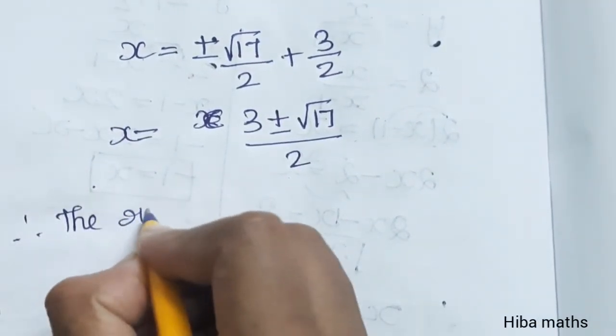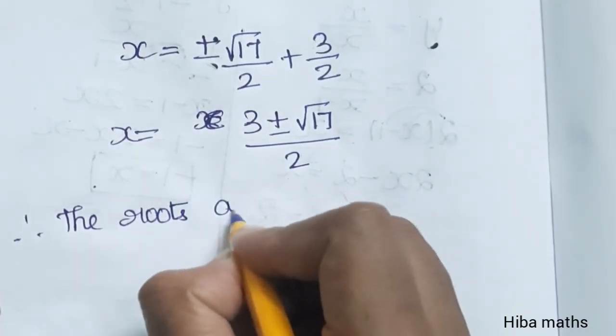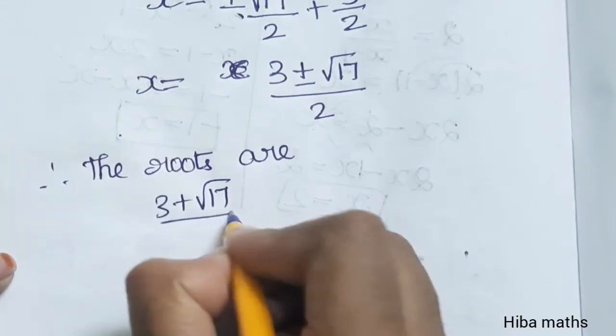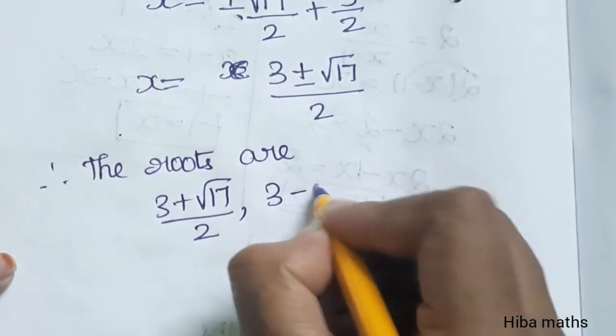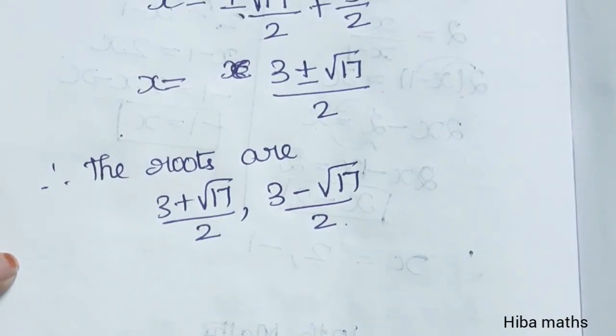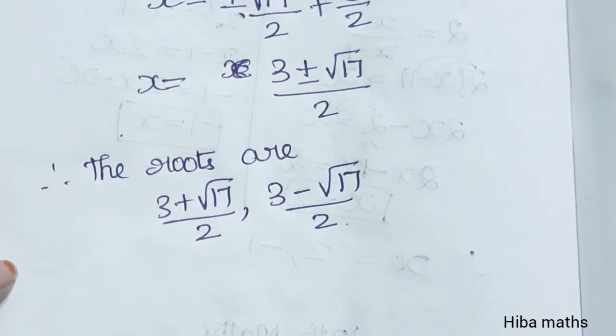Therefore, the roots are (3 + √17)/2 and (3 - √17)/2. The roots are very easy. Thank you so much for watching.